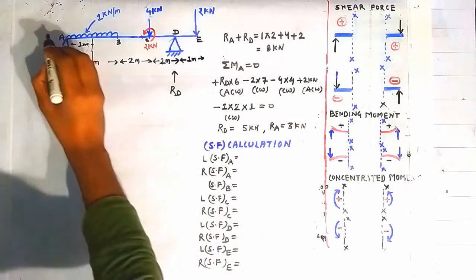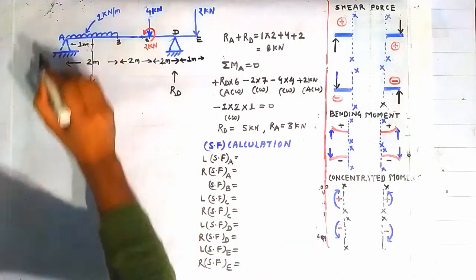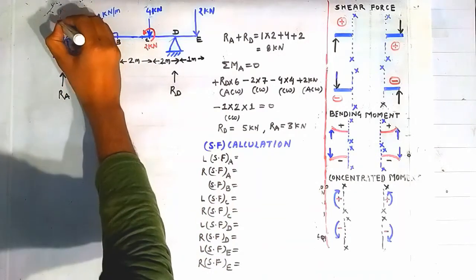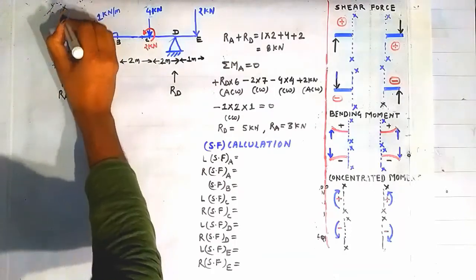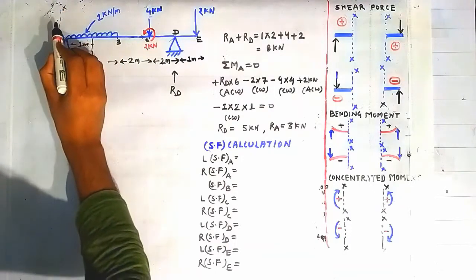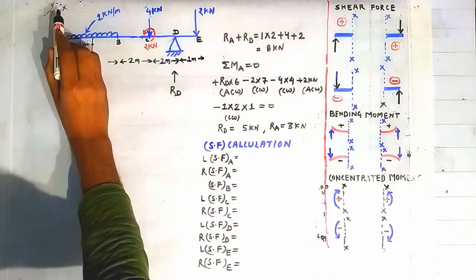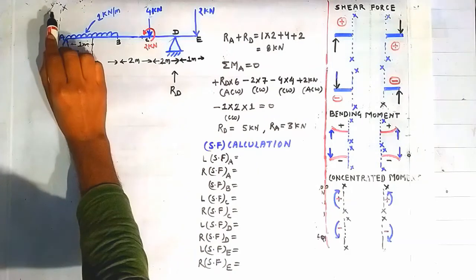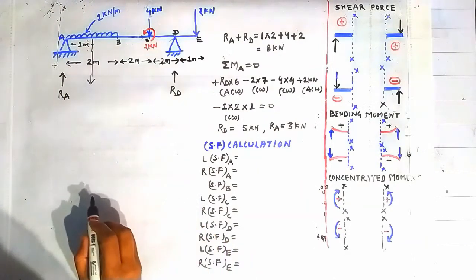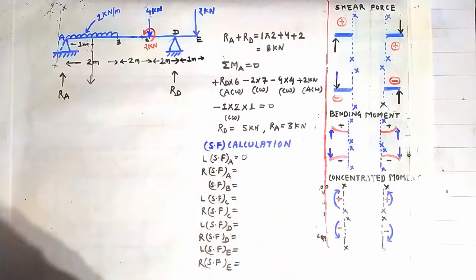To find shear force on the left side of point A, we construct a section to the left of point A. Looking on the left side of this section, nothing is present, so the shear force on the left side of point A is equal to zero.